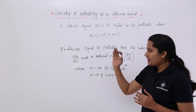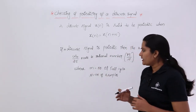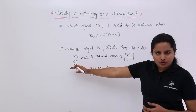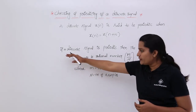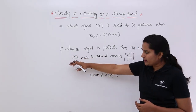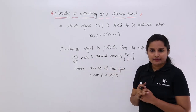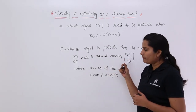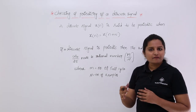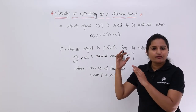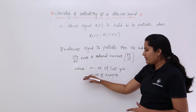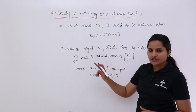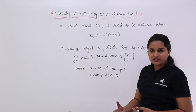If a discrete signal is periodic, then the ratio of its fundamental frequency divided by 2π must be a rational number. That means it equals m/N, where m is the number of full cycles in the original continuous signal, and capital N (the denominator) represents the number of samples.